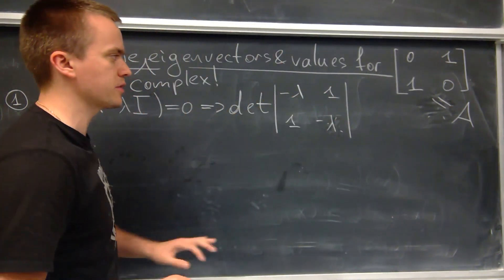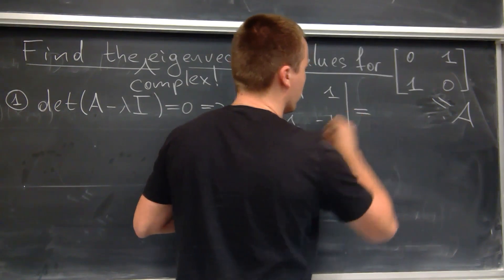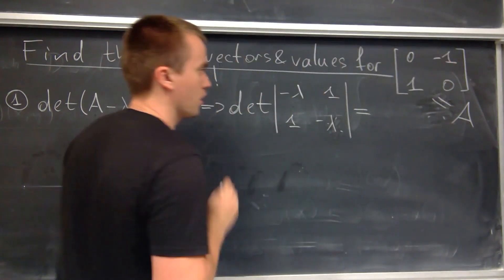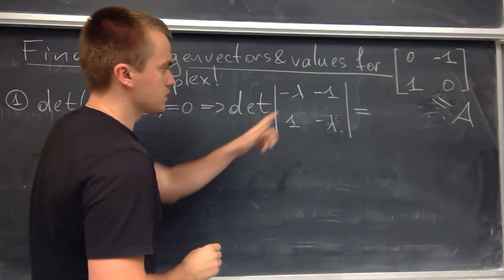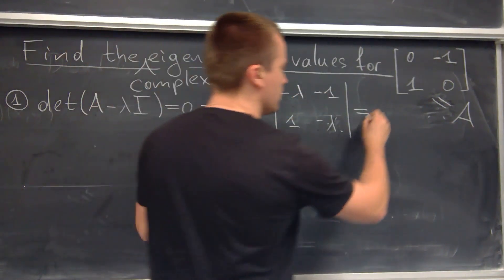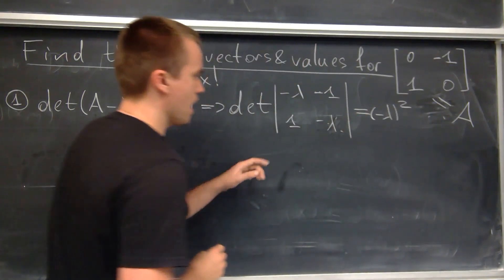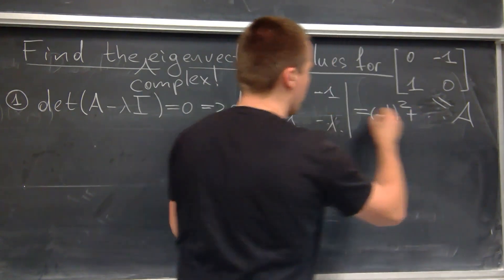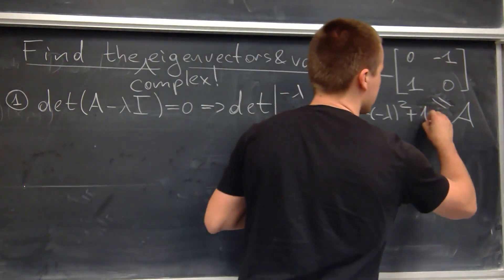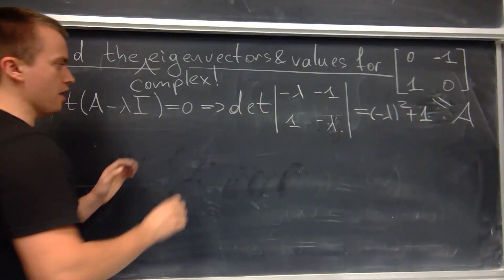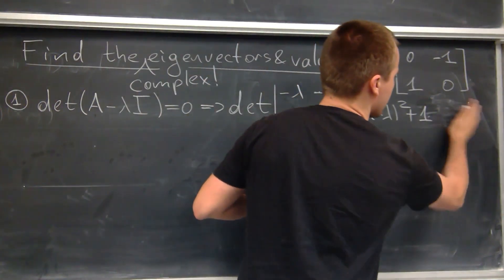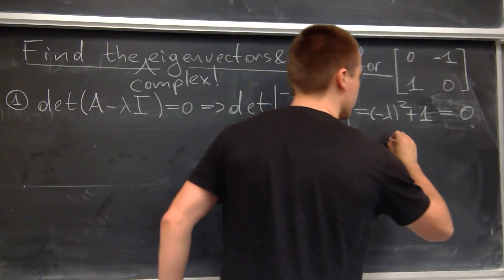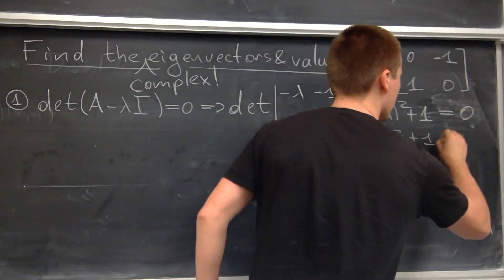You can see why I chose this matrix — the determinant is super easy to compute. I have minus lambda times minus lambda, which gives lambda squared, and then minus 1 times minus 1, which gives plus 1. Setting the whole determinant equal to zero, I get lambda squared plus 1 equals zero.